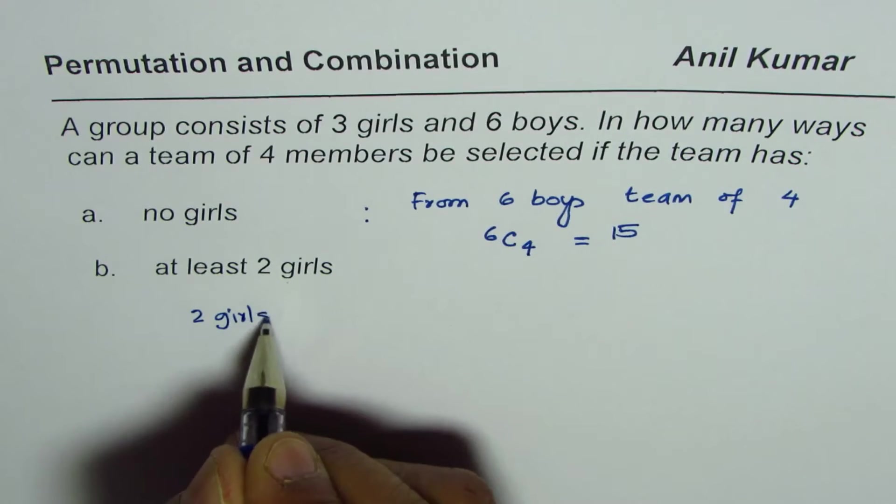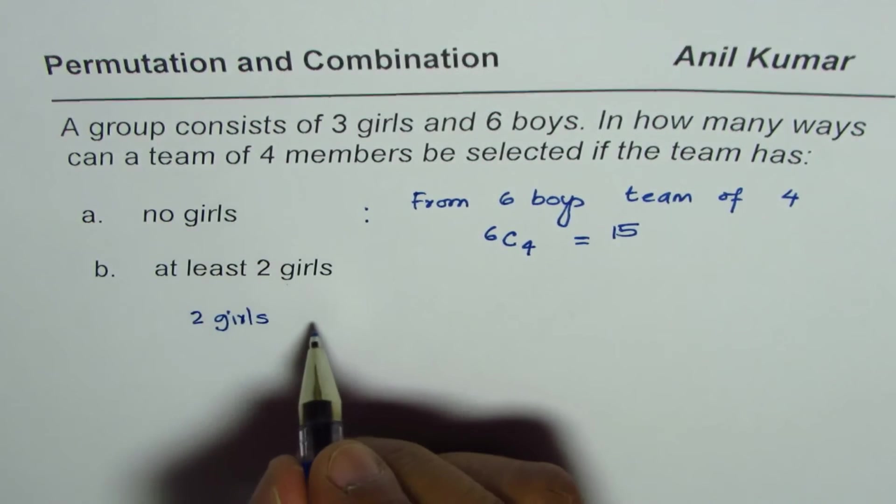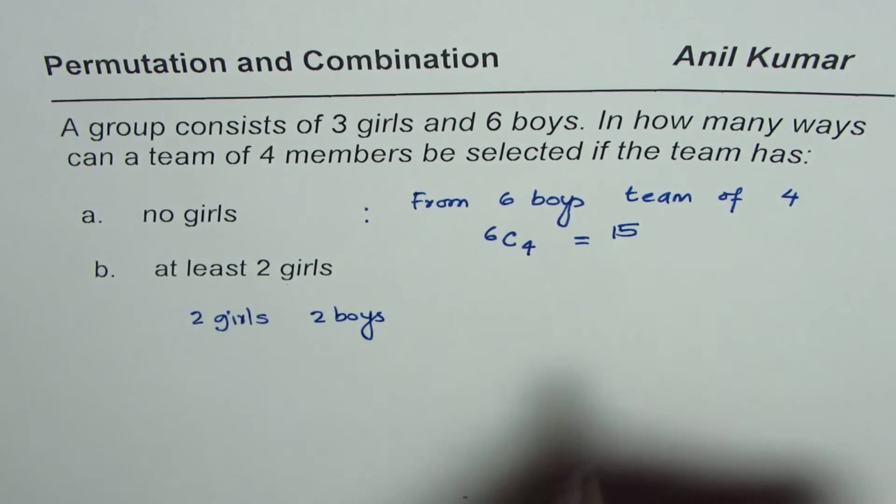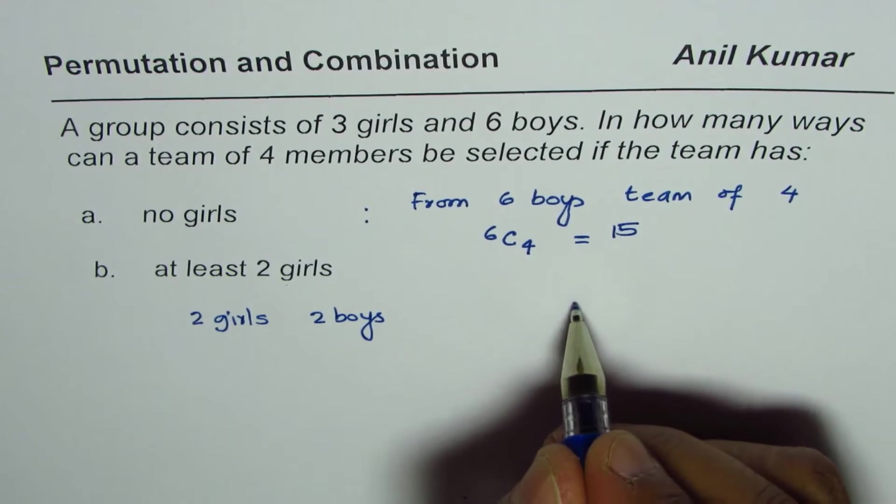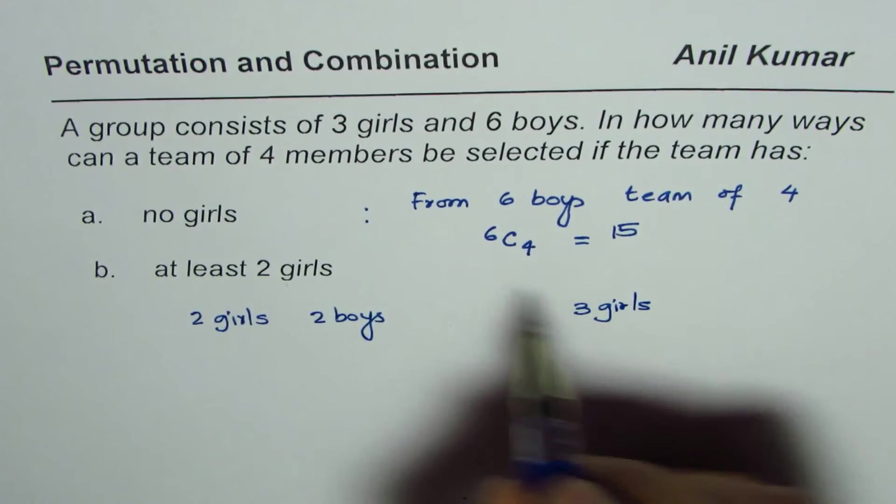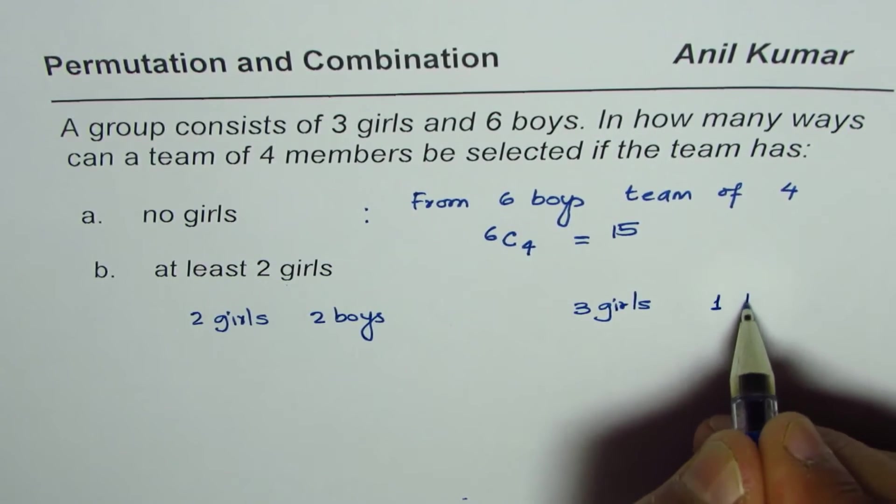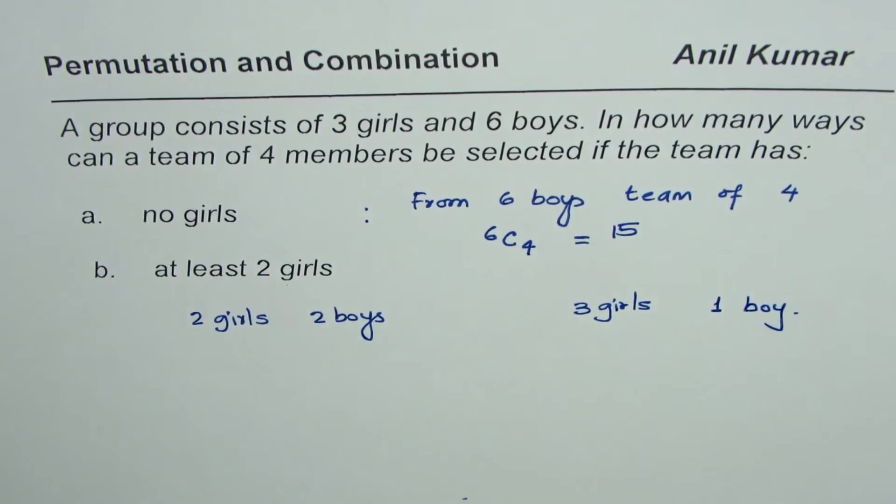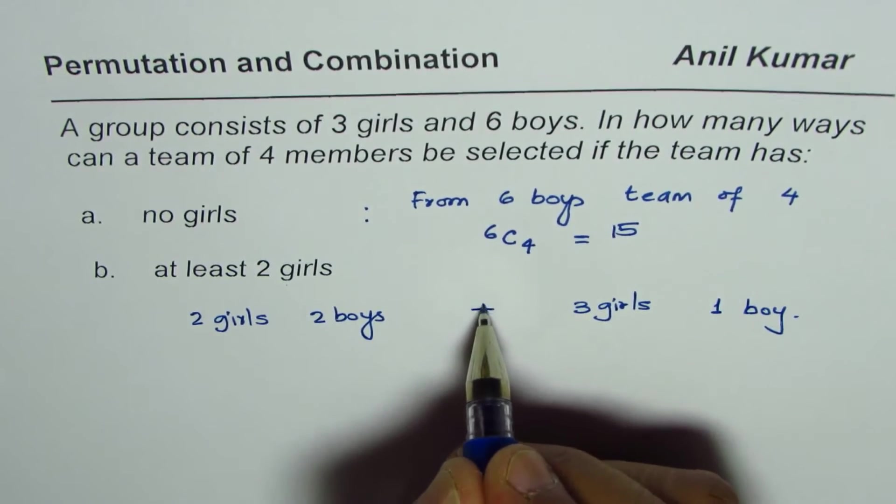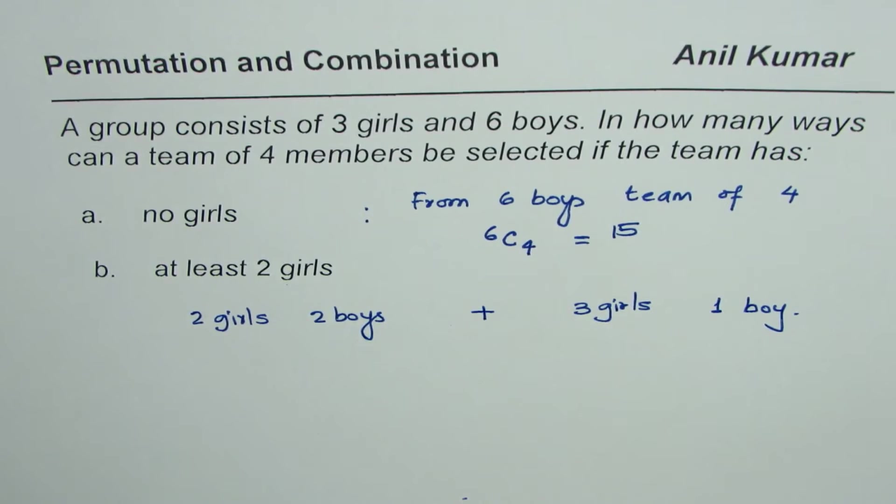So if you have two girls, we need a team of four. That means two girls and two boys. That is one option. The other option is we can have three girls and one boy. So these are the two different combinations, and we need to add them up. So that is the strategy for such questions.